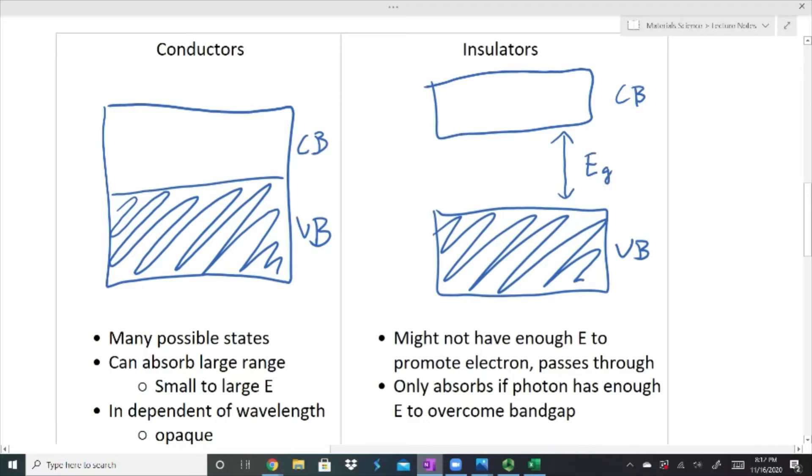We have our valence band which is full of electrons and we have our conduction band which is empty, but there is some band gap here, some energy that we have to overcome to be able to get an electron promoted. With our conductor, there is no gap; it's very easy to get an electron to move up. So what happens here is when I have a photon come in, what's going to happen with each one?